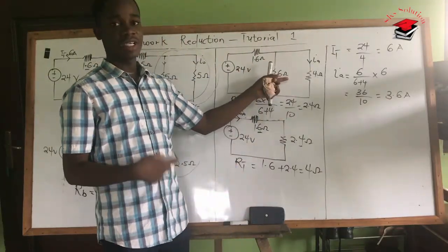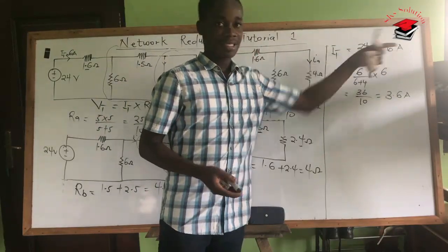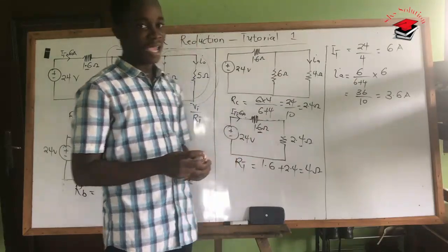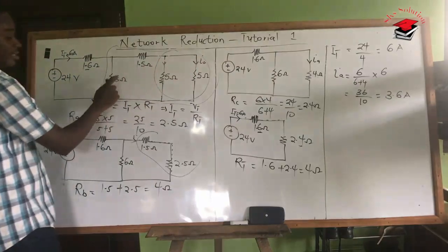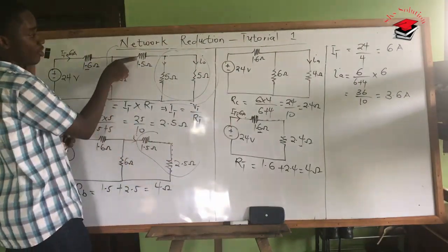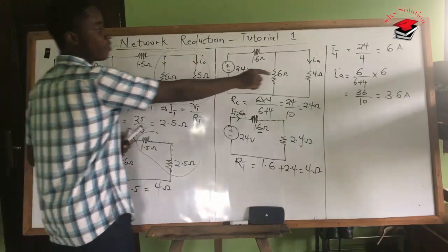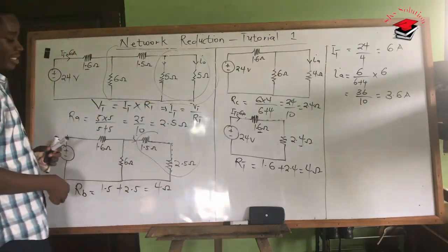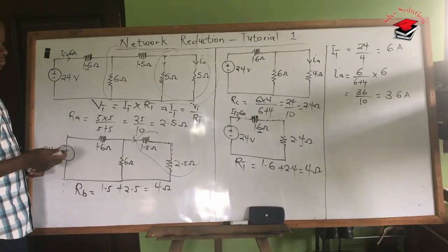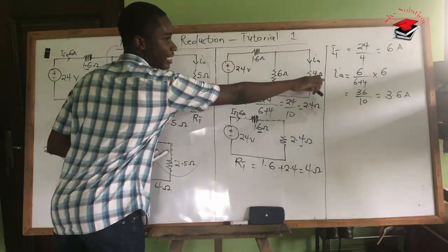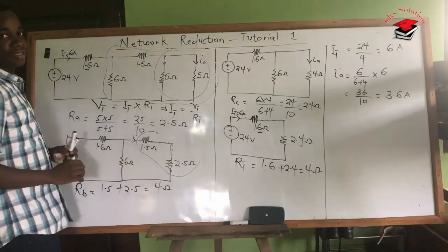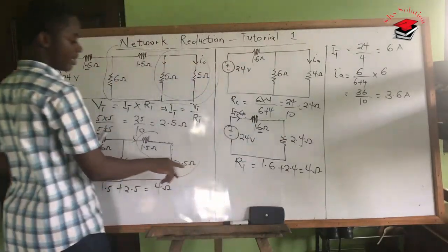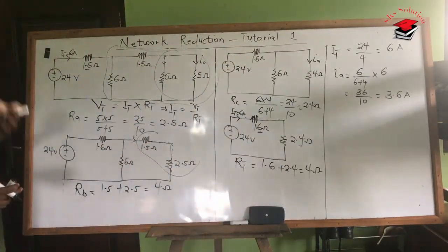That gives us ID = (6 / 10) × 6 = 3.6 amps flowing through the 4-ohm branch. Now, this 4 ohms was the combination of 1.5 ohms and 2.5 ohms in series. Since they are in series, the current through the equivalent is the same as the current through each of those resistors. So the current in the 1.5 ohms is 3.6 amps, and the current in the 2.5 ohms is also 3.6 amps.